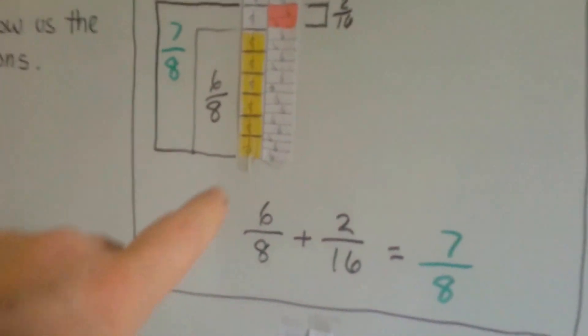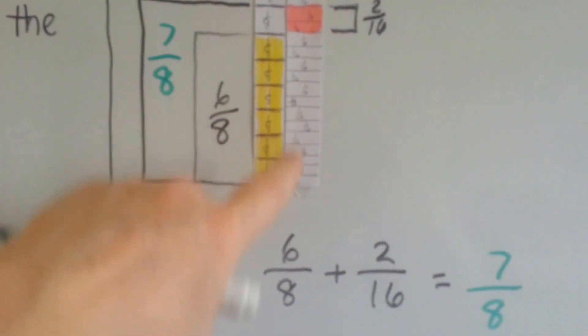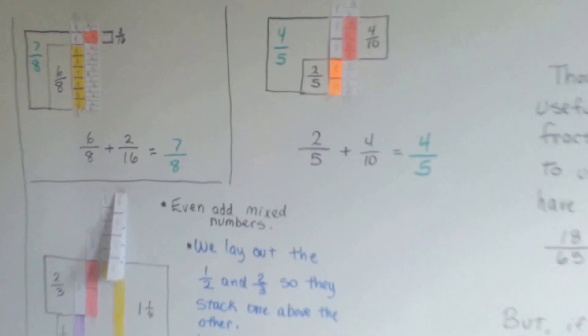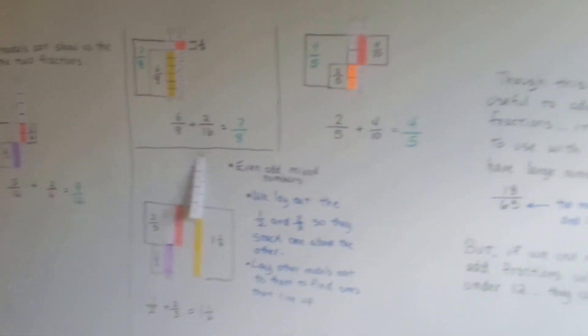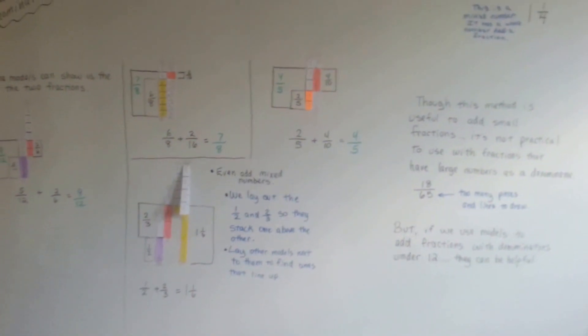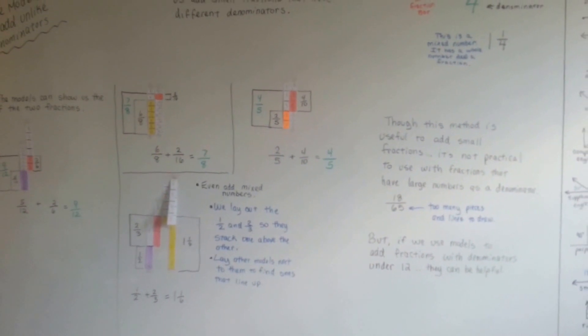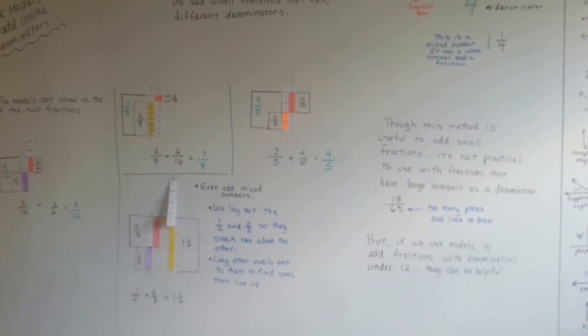Even the sixths get pretty tiny. So we can use these to help us add unlike denominators when we're adding fractions. See you in the next unit. Bye!